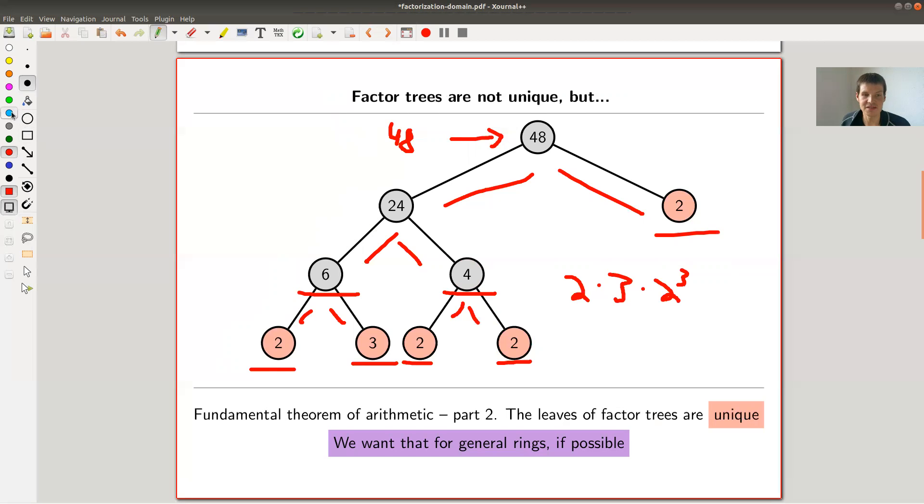And just a slight disclaimer. Uniqueness is, of course, a little bit of, it's not really unique in that sense. So, for example, you can always add units somewhere. So invertible elements. Again, I said, in ring theory, we don't care for invertible elements. Kind of everything is only well-defined up to invertible elements.